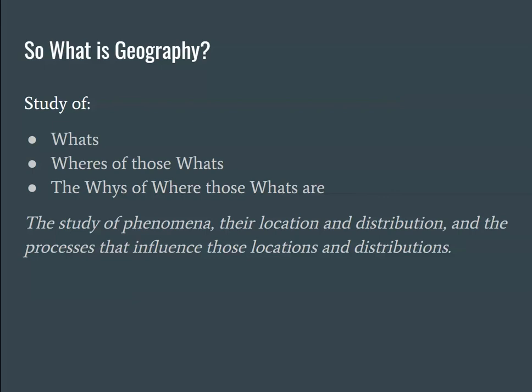For example, it could be saxophones or giant sequoias — the 'wheres' of those things. How are saxophone players distributed in the United States? Where are jazz clubs? Where are sequoias or prairies? But the most important thing in geography is why. Why did jazz exist as a dominant music form in certain areas and not others? Why do grasslands extend into Indiana historically but not as far as Pennsylvania? It's the 'whys' of phenomena, their distribution, location, and the processes that influence that.